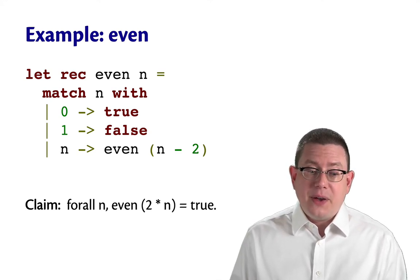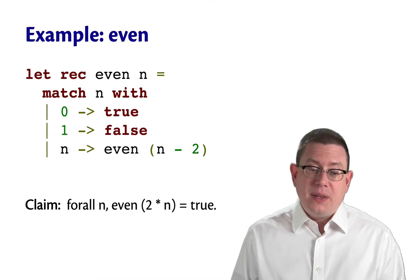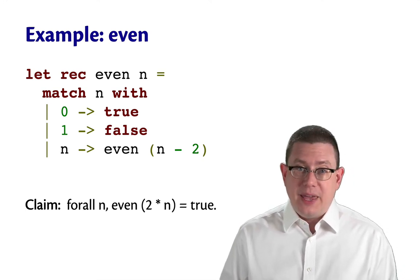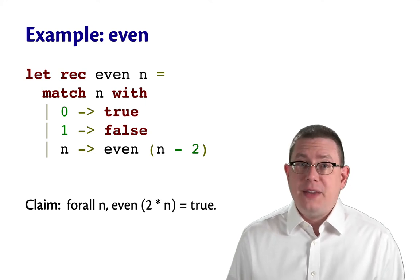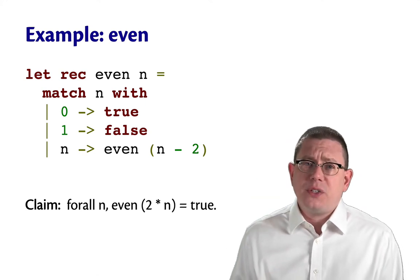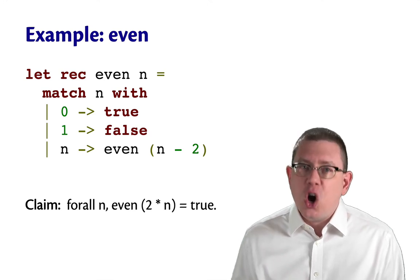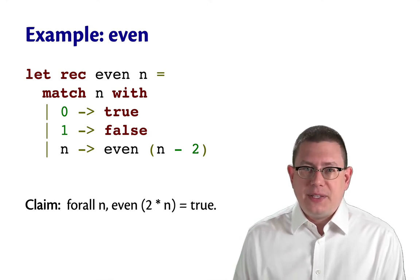Okay, so what I'd like to claim here is that for all natural numbers n, even of 2 times n is going to be true. You add in a factor of 2, you do have an even number. Now, you know that from mathematics, of course. But this is a piece of code. How do we reason about that piece of code?